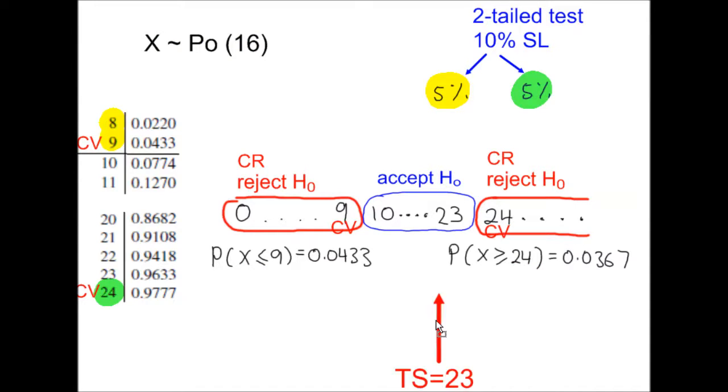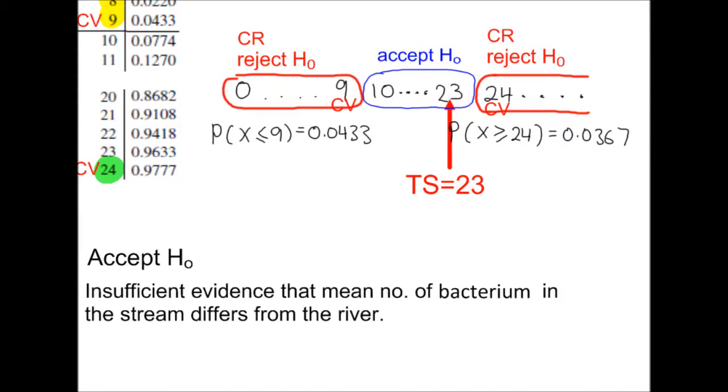The test value is 23, which clearly falls in the acceptance region. So we accept H0 and conclude that there is insufficient evidence that the mean number of bacterium in the stream differs from the river.